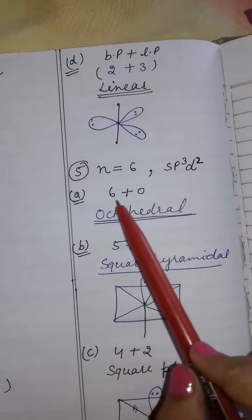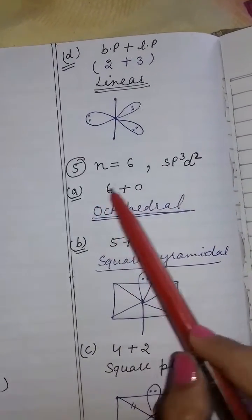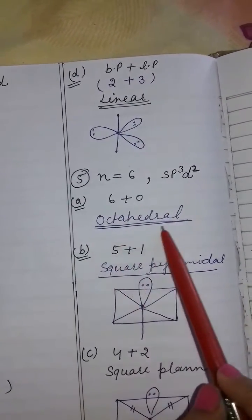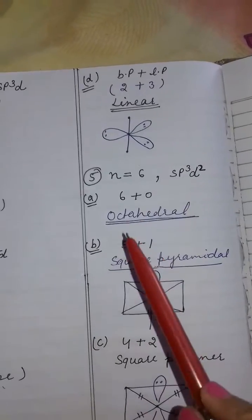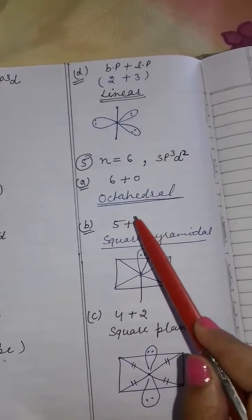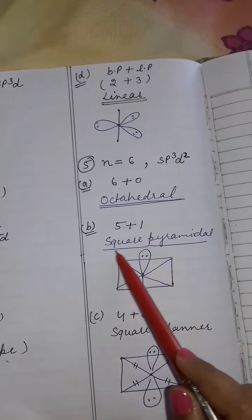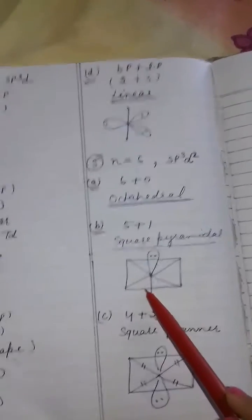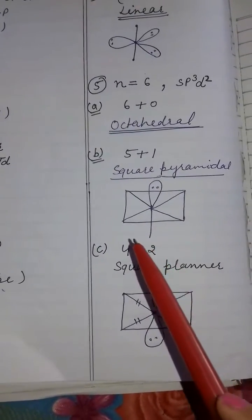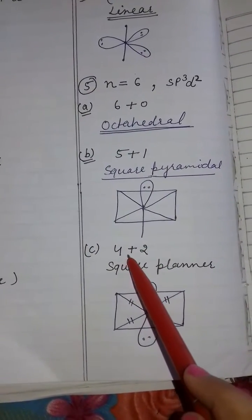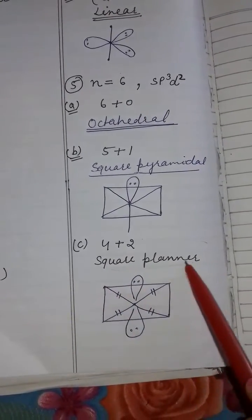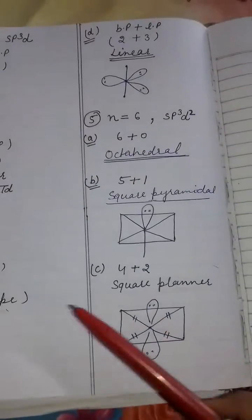If n is equal to 6, then hybridization is sp3d2 or d2sp3. If bond pairs are 6 and there is no lone pair, then shape will be octahedral. If bond pairs are 5 and there is one lone pair, then shape will be square pyramidal, as shown in this diagram. If bond pairs are 4 and lone pairs are 2, then shape is square planar, as shown in this diagram.